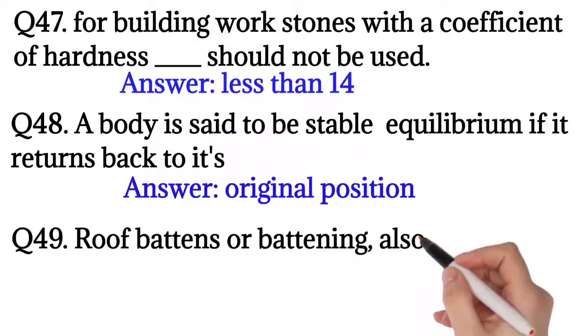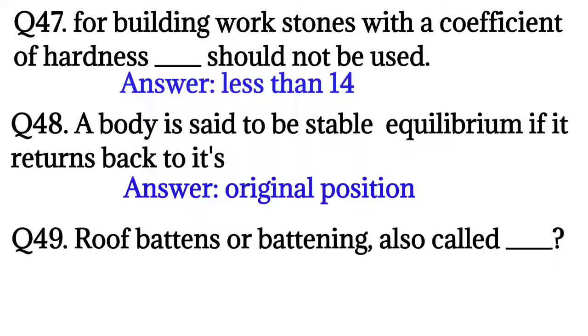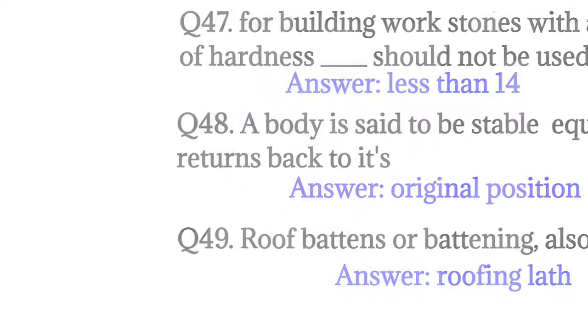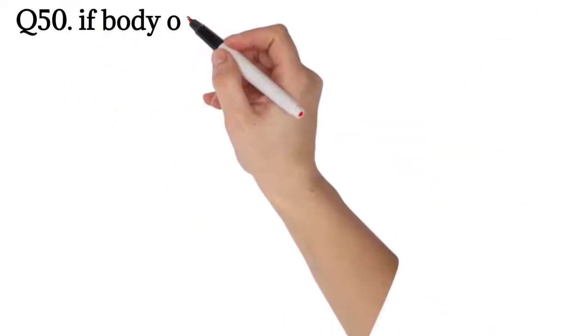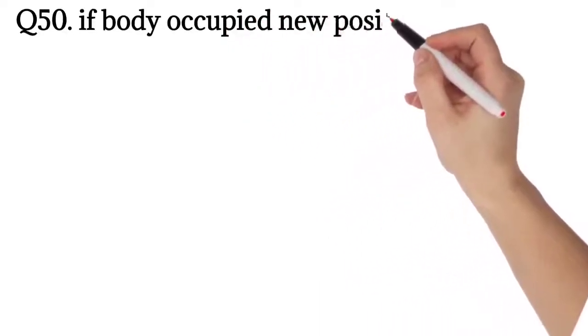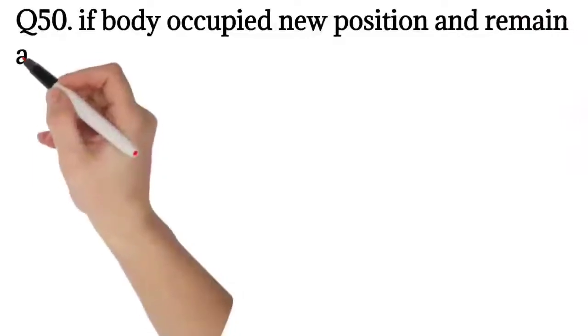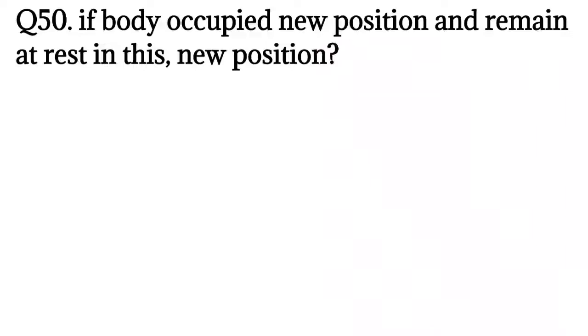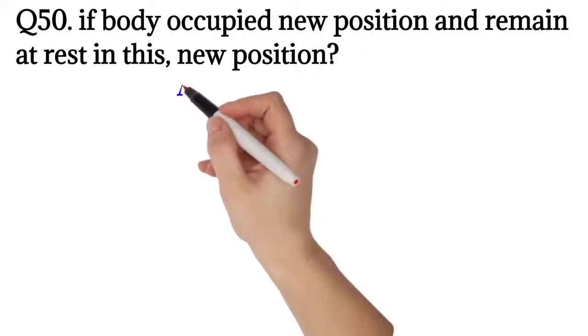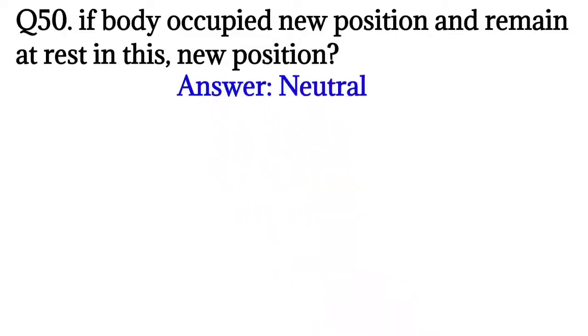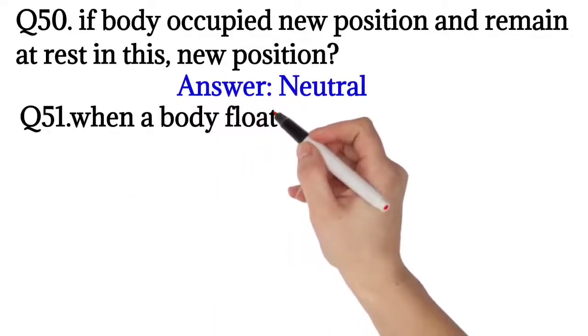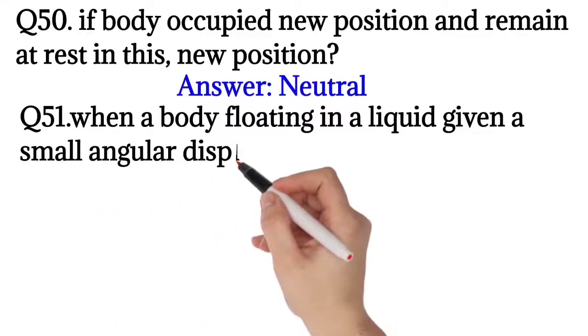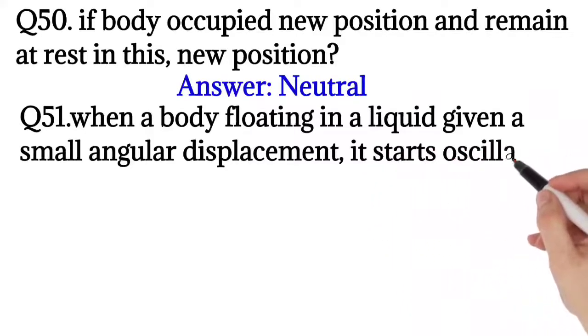Question number 49: Roof battens or battening is also called? The answer is roofing lath. Question 50: If a body occupies a new position and remains at rest in this new position, it is called? The answer is neutral equilibrium.